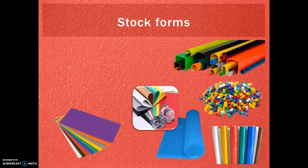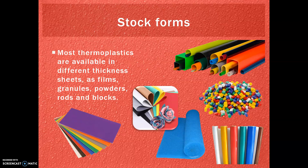Plastics are available in all sorts of stock forms — how they are prepared before being produced into useful products. They're available in different thicknesses of sheets, such as HIPS sheets for vacuum forming at school; as films, like vinyl film; granules or powders for injection moulding; and also rods and blocks.